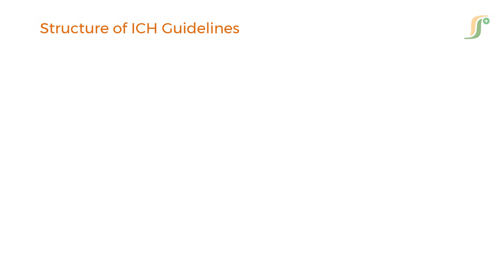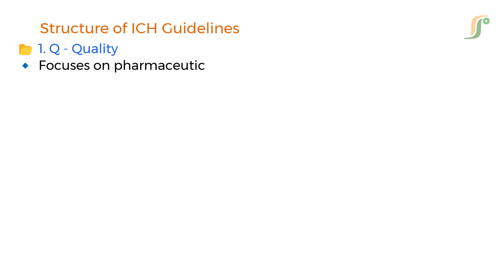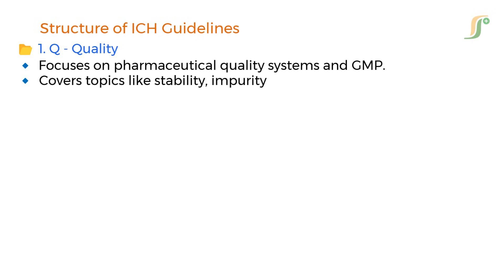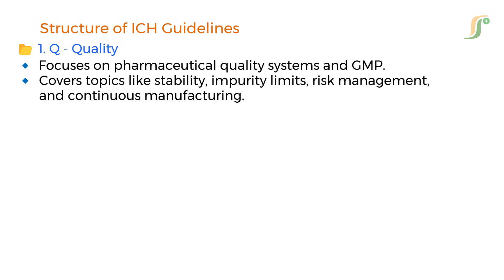The ICH guidelines are categorized into four main areas, each designated by a letter. First is Q for Quality, which focuses on Pharmaceutical Quality Systems and GMP. It covers topics like stability, impurity limits, risk management, and continuous manufacturing.